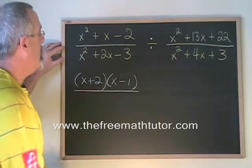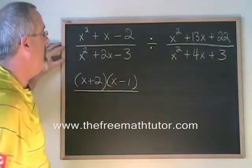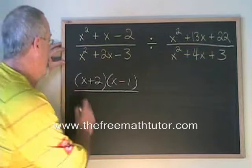Second trinomial. What two numbers multiply to give negative 3 and add to give 2? They are 3 and negative 1.